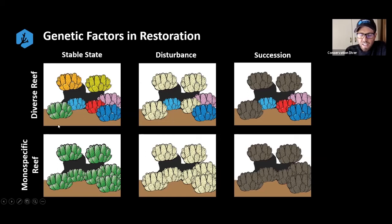But they're going to be different genetic individuals — that's why I've colored them differently in this diagram. Each different color is a different genetic individual, even though they're all the same species.